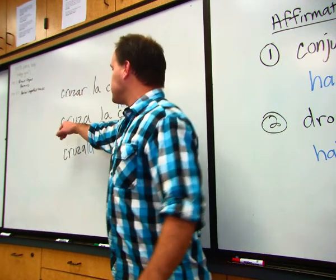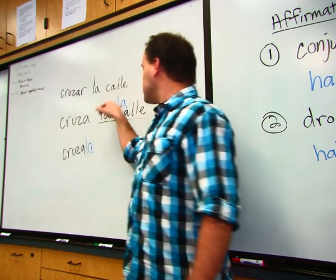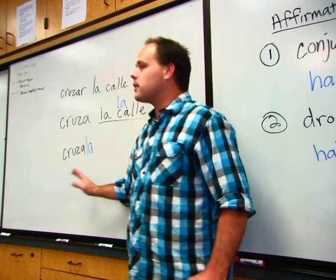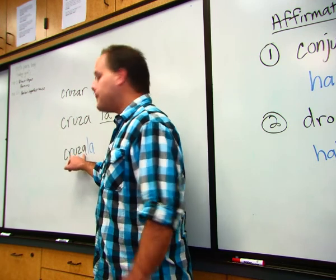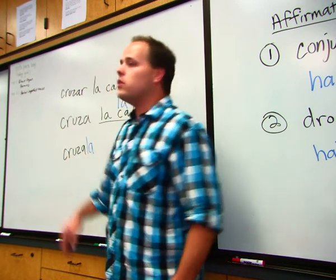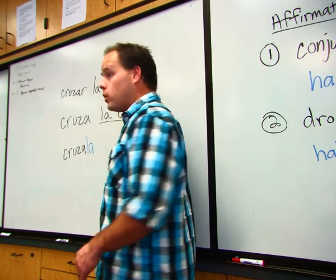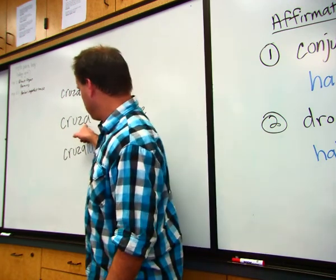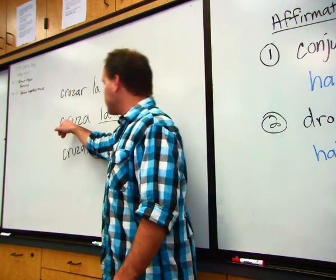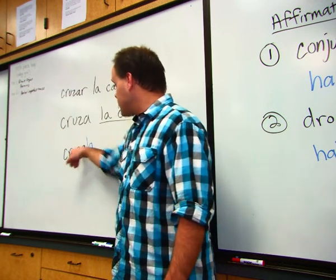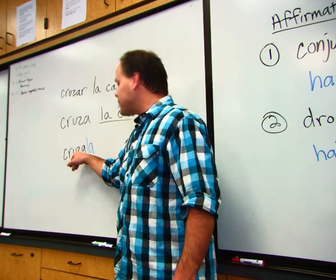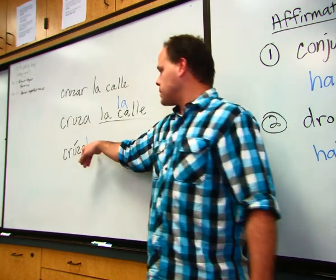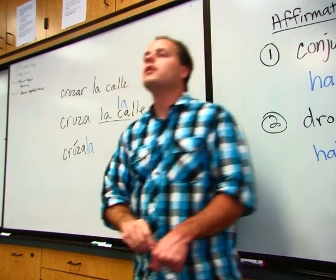Normally the emphasis in cruza is on the U. When we add another syllable by attaching the pronoun, it changes the natural stress rule. The rule is: if a word ends in N, S, or a vowel, the stress falls on the second-to-last syllable. The word crúzala ends in a vowel, so it should be stressed on the second-to-last syllable — but it's not; it maintains its stress on the U. Since it no longer follows the rule, you must add an accent mark. So when using a command form with a direct object pronoun, there's a very good chance you'll need to add an accent over the stressed syllable.